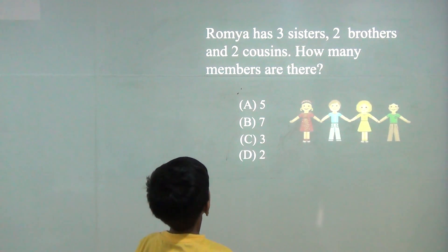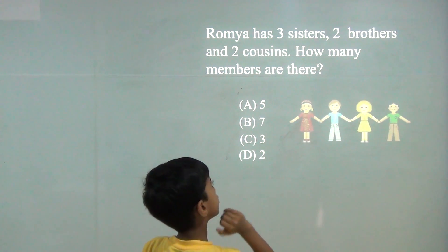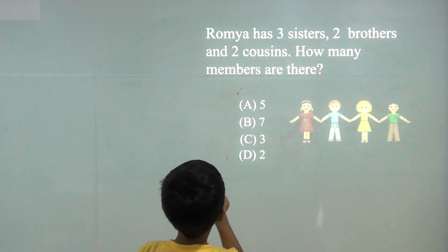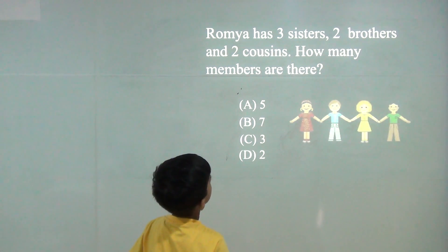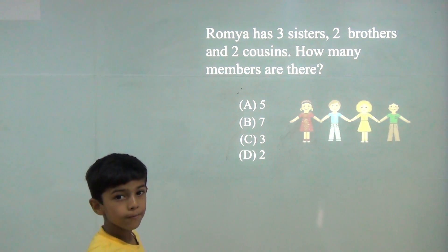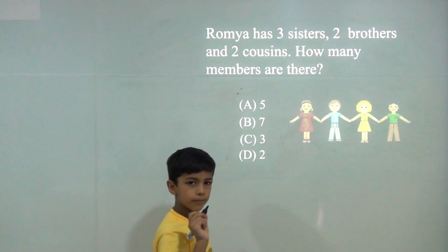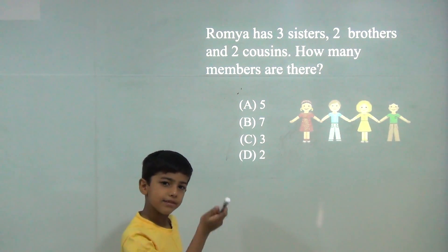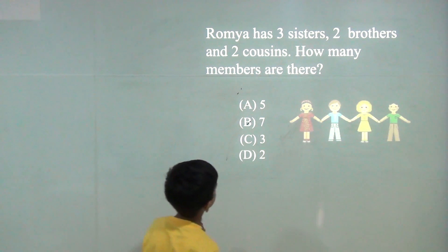Romeo has 3 sisters, 2 brothers, and 2 cousins. How many members are there? So we will do 2 plus 2 plus 3. 4, 5, 6, 7. So the answer would be 7.